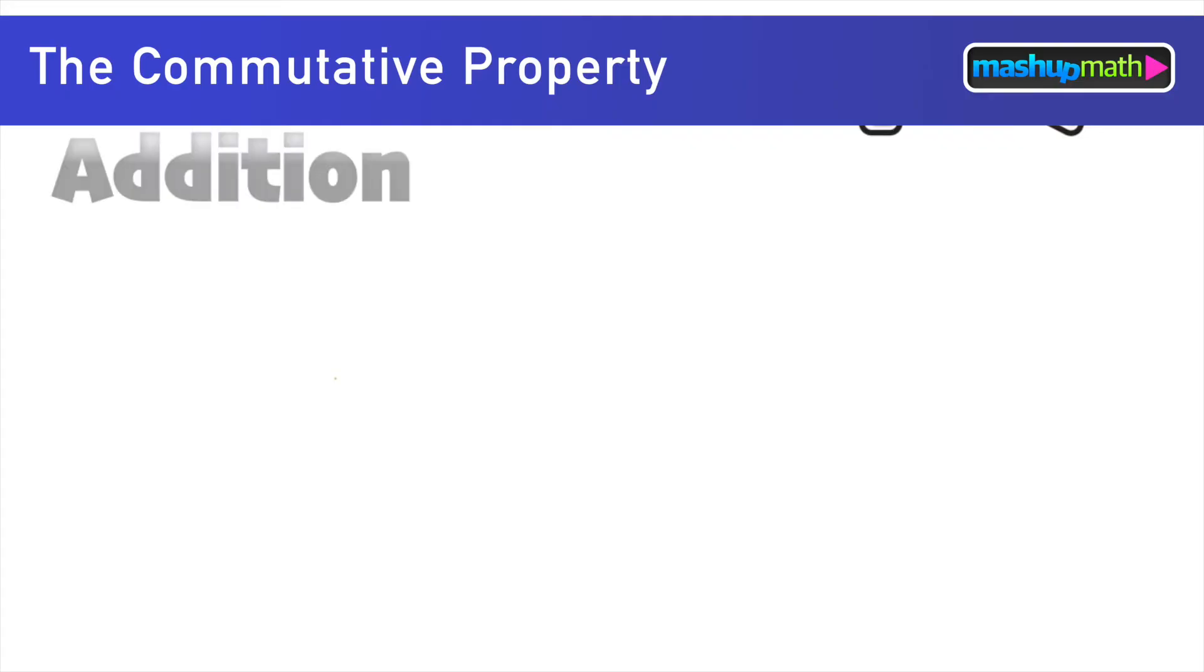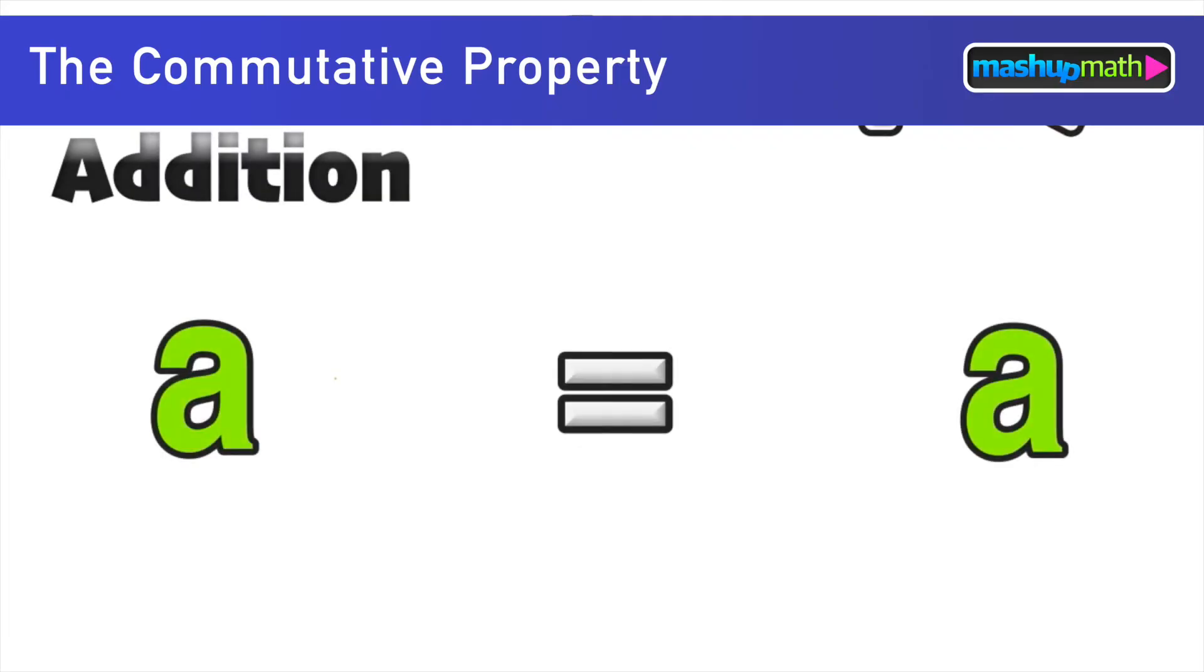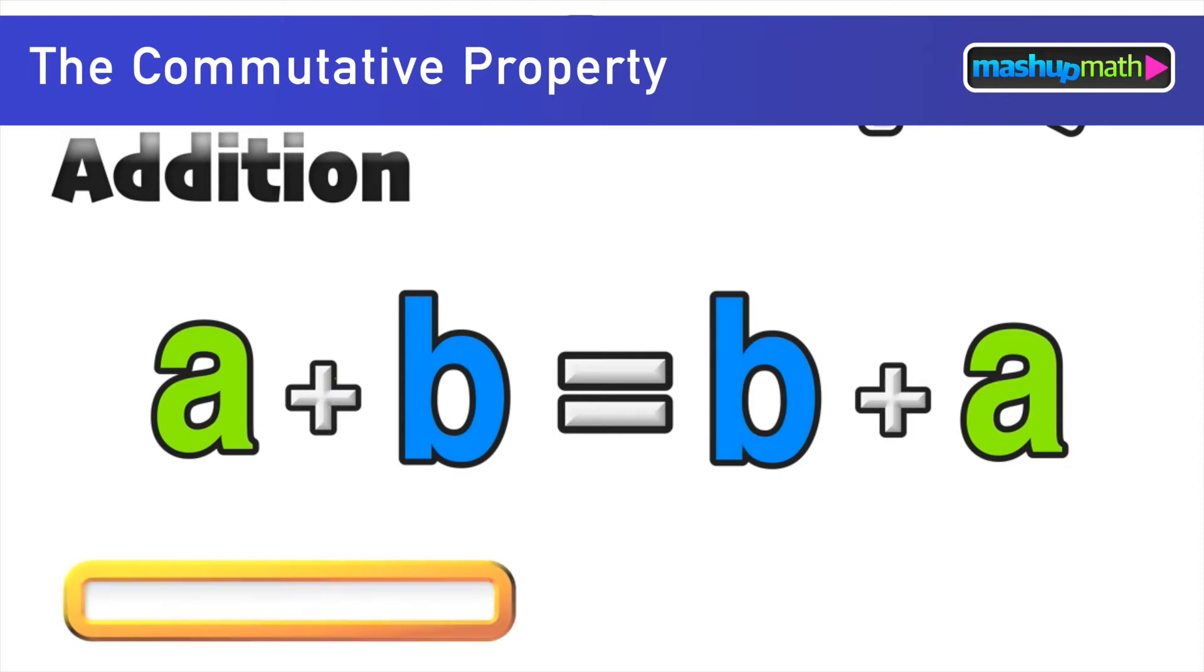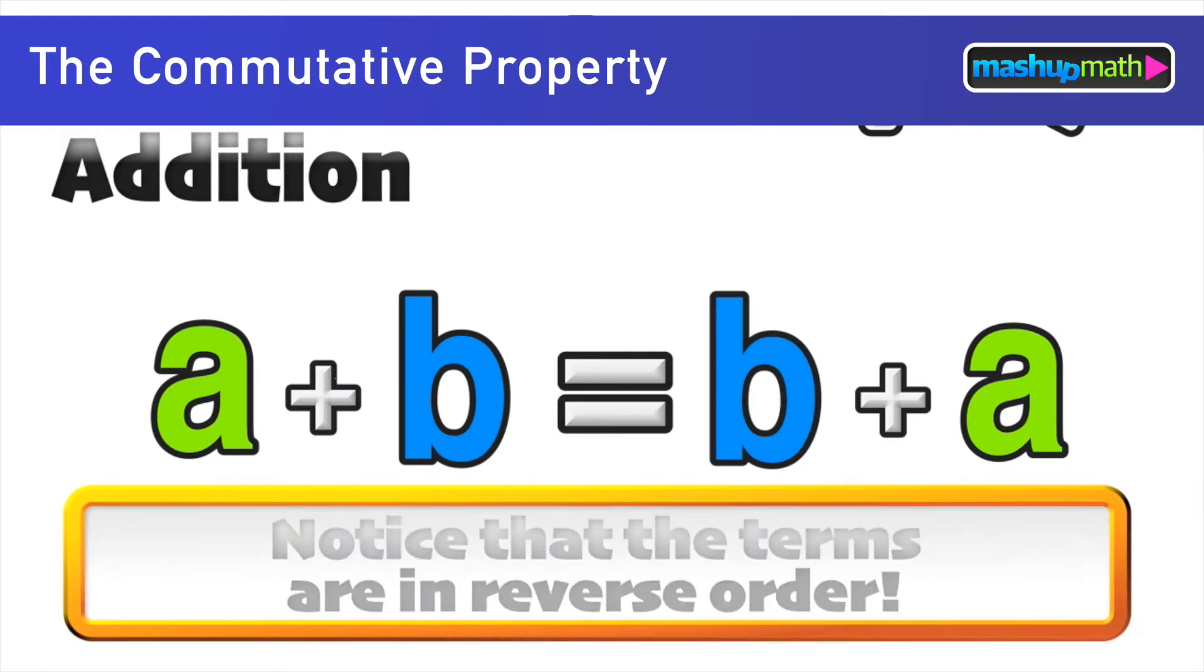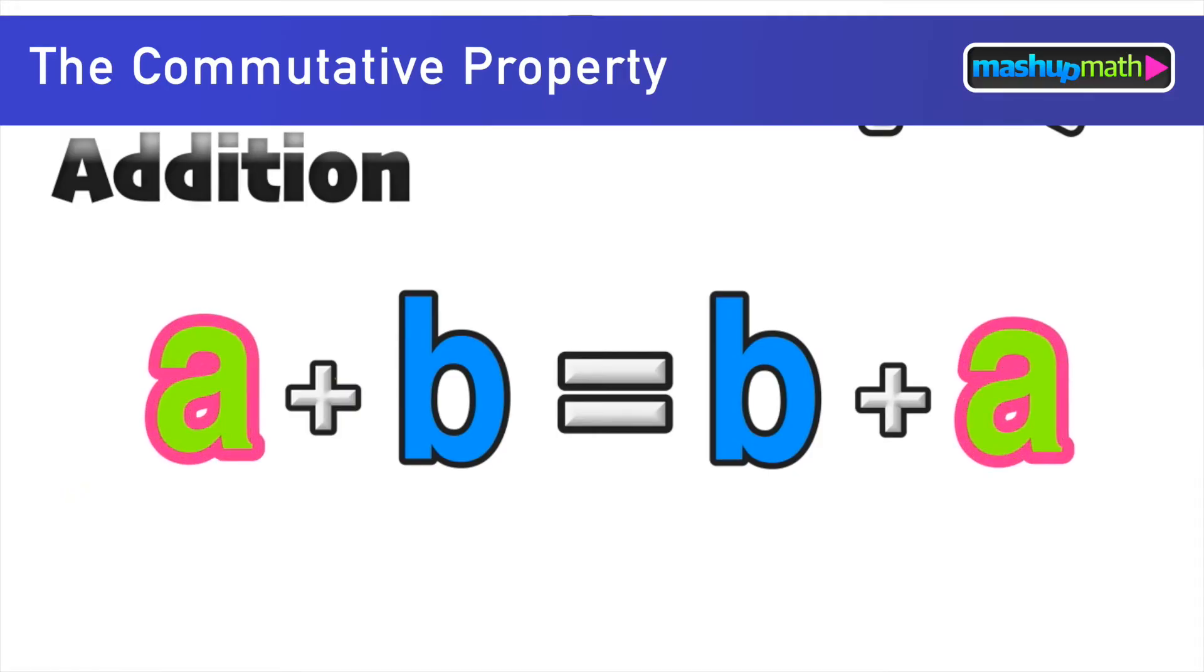So now we're going to look at an example that shows why the commutative property holds under addition. The definition of commutative property is that a plus b is equal to b plus a for any real numbers a or b. And again we're noticing that the terms are just in reverse order on either side of the equal sign.